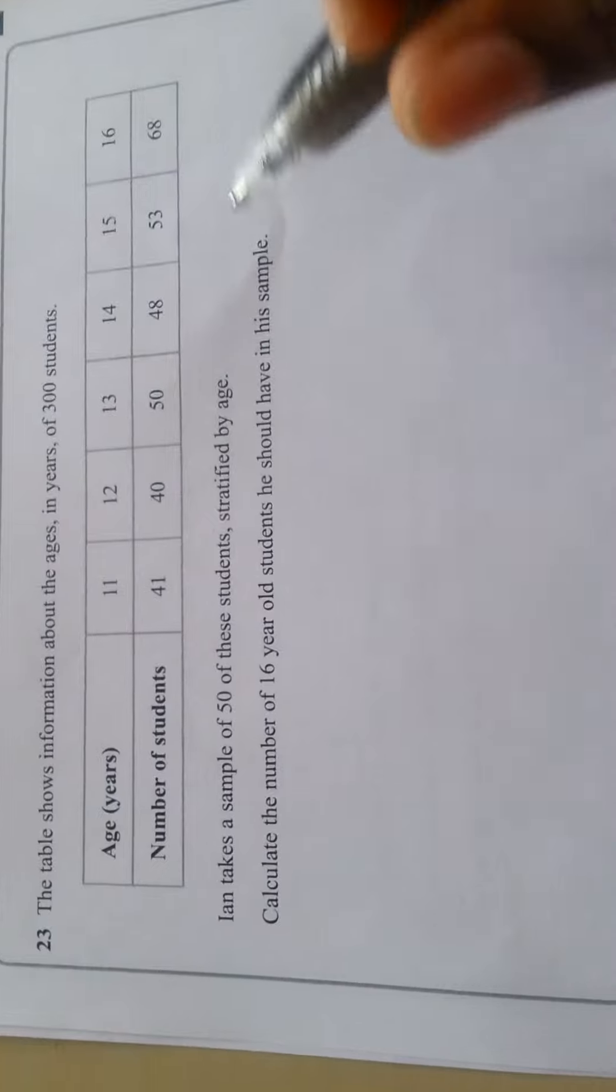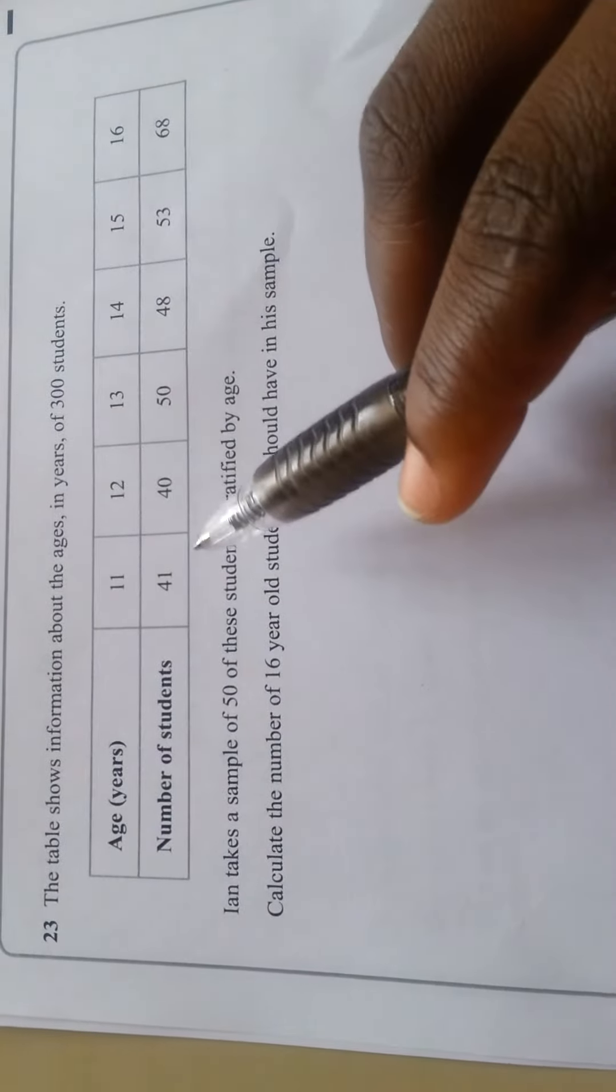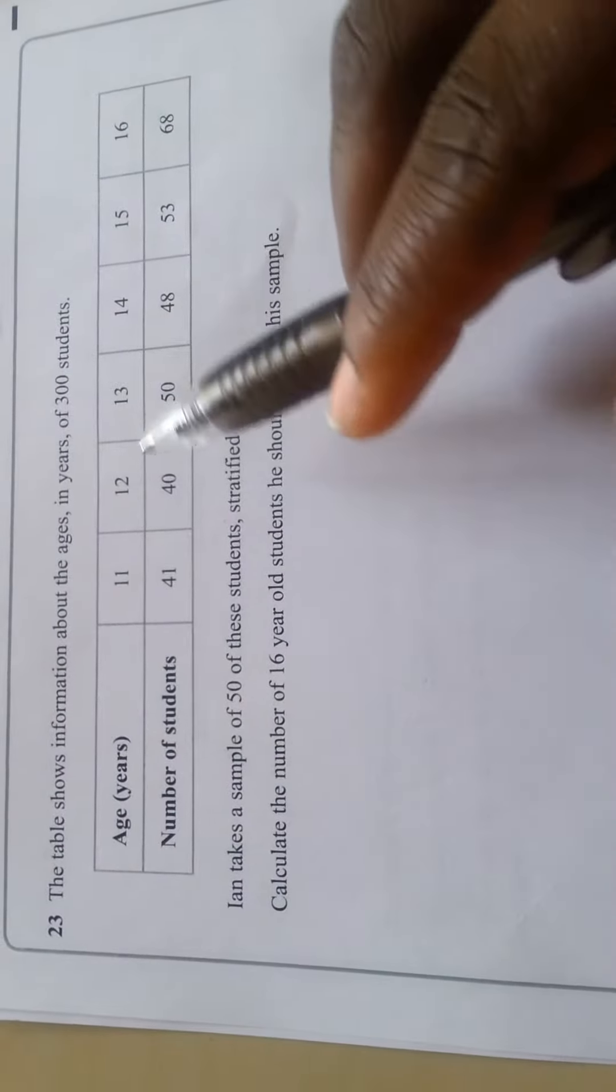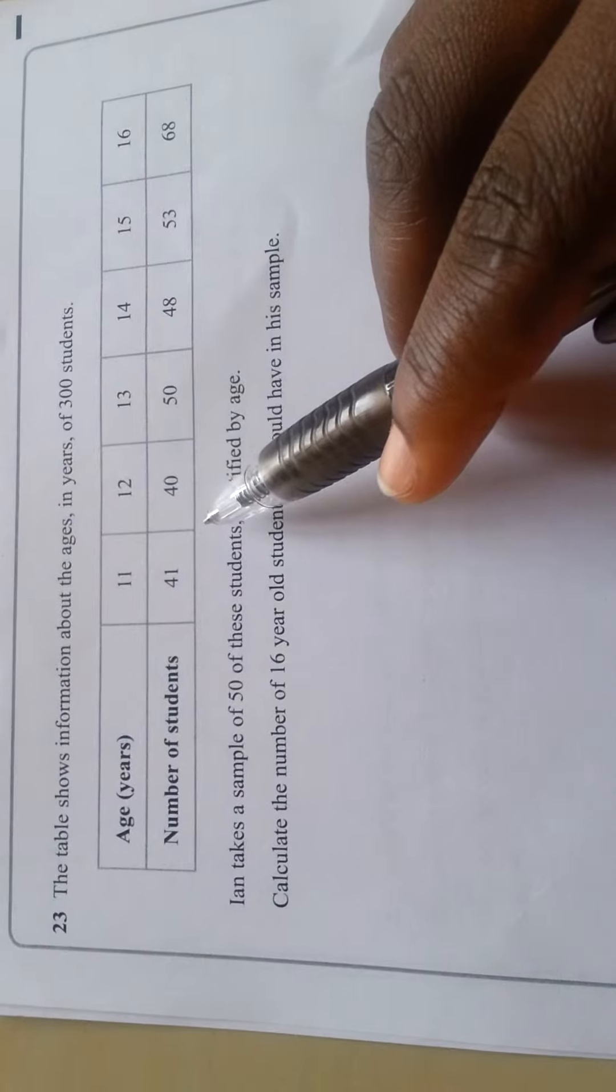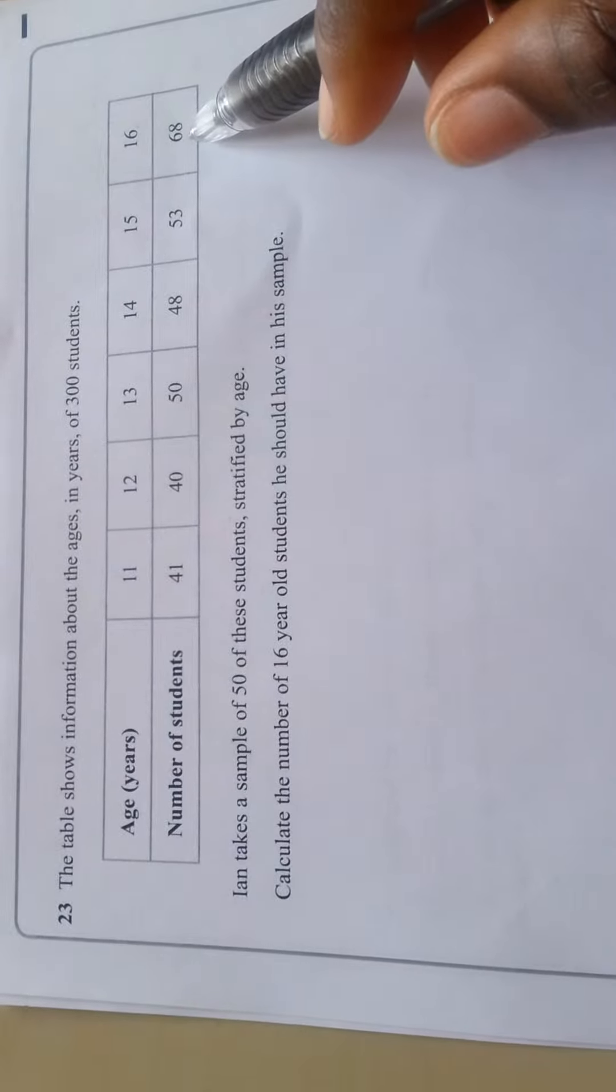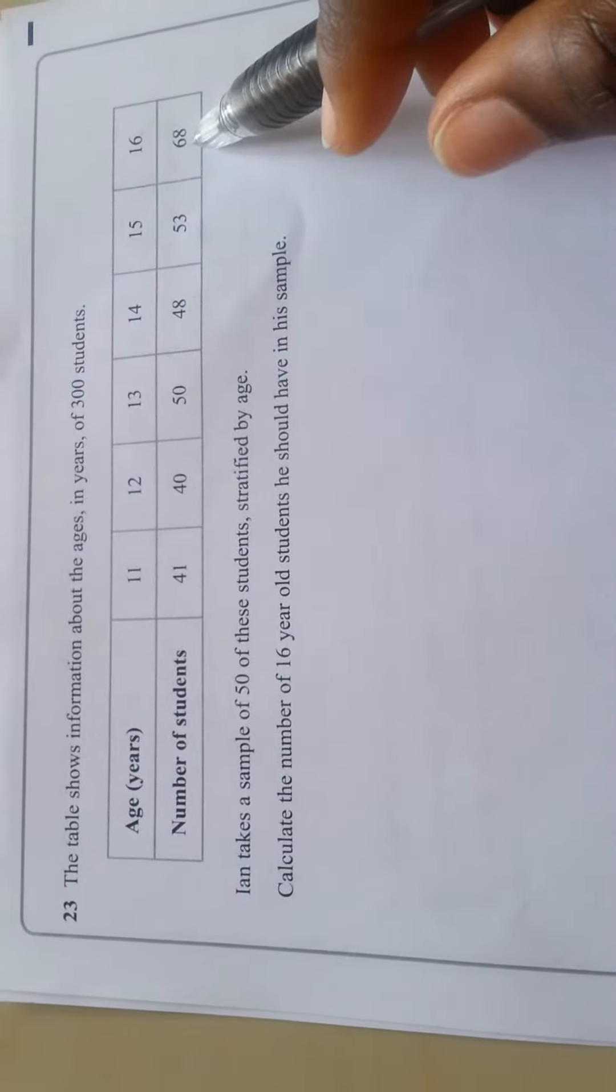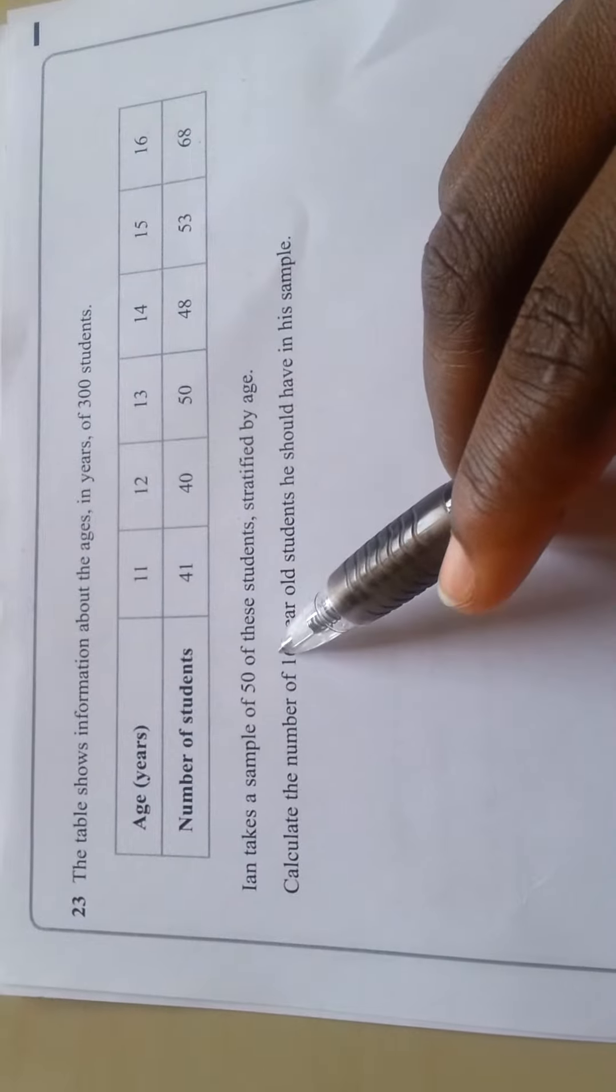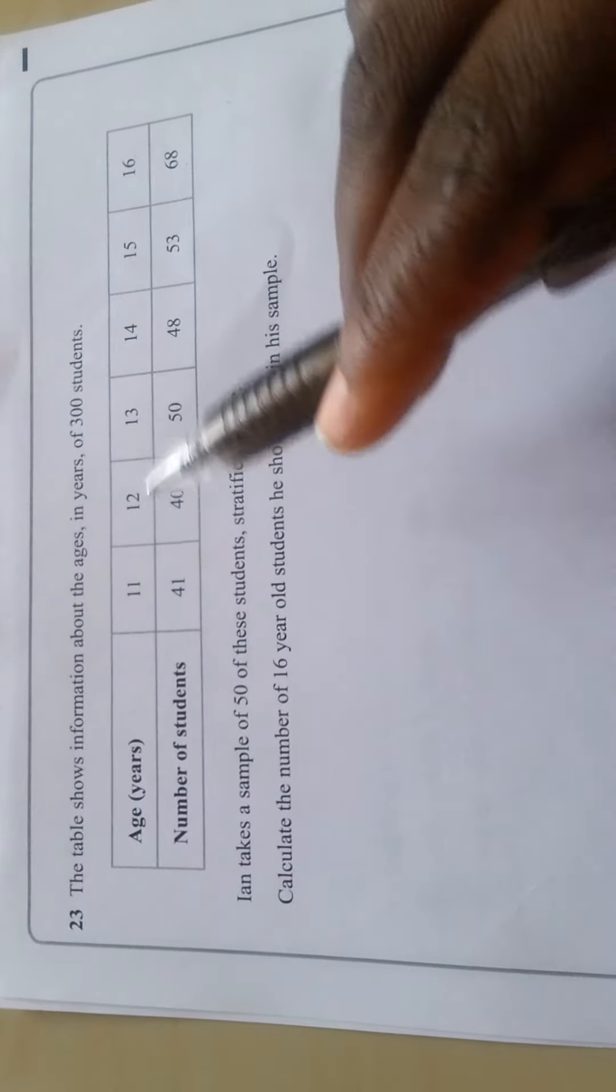Now the total number of students is 300. Out of those 300 students, the ones that are 16 years are 68. Now we're told that a sample of 50 was taken from this total number of students.